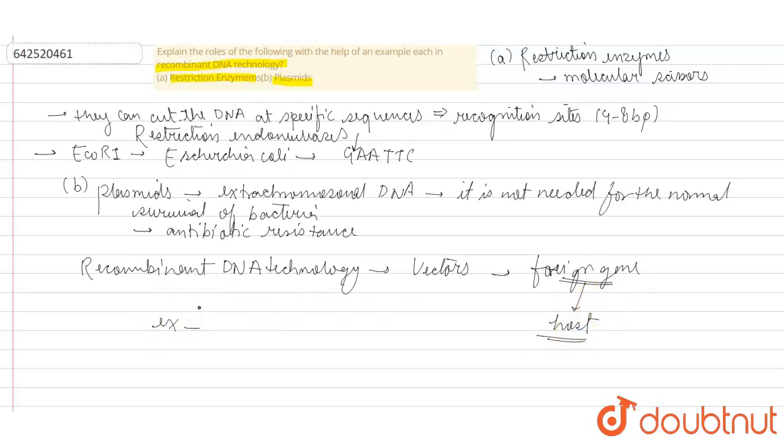So the most common plasmid which is commonly used is PBR-322. And this plasmid basically has some antibiotic resistant sites. It has some selectable markers, different recognition sites, and ORI or origin of replication. So I hope this answers your question.